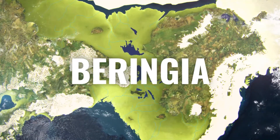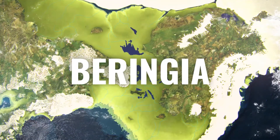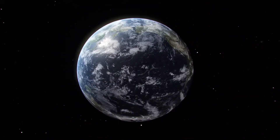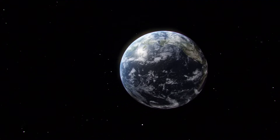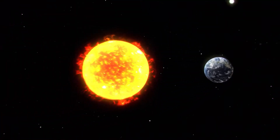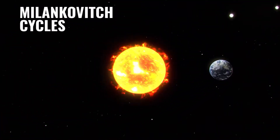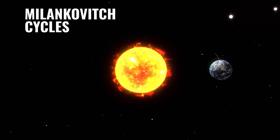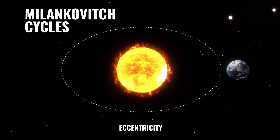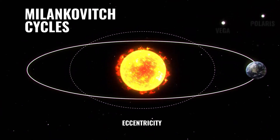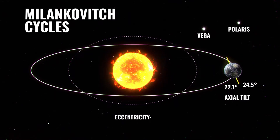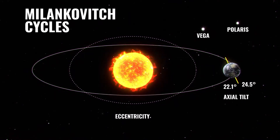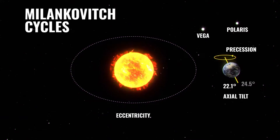But to fully understand the formation of this region, we must pull back — not just back in time, but in space. Three planetary orbital fluctuations called Milankovitch cycles affect how much solar radiation reaches the Earth. These change the shape and distance of our planet's orbit around the Sun, the angle the Earth is tilted towards the Sun, and the extent to which the Earth wobbles while it spins.